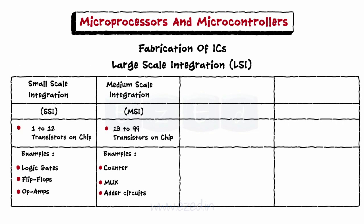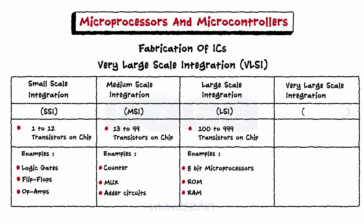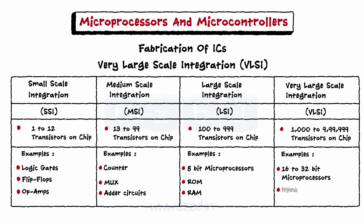The third type is large-scale integration. In case of large-scale integration, a single IC has 100 to 999 number of transistors mounted on it. 8-bit microprocessors, ROM, and RAM are examples of such ICs. The fourth and last type is very large-scale integration, VLSI. In this type, the number of transistors or gates on a single chip is very large. A VLSI fabricated IC has 1000 to 9,099,999 transistors mounted on a single chip. 16 to 32-bit microprocessors, peripherals, etc. are examples of VLSI circuits.